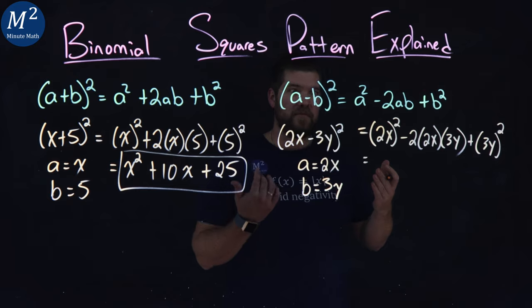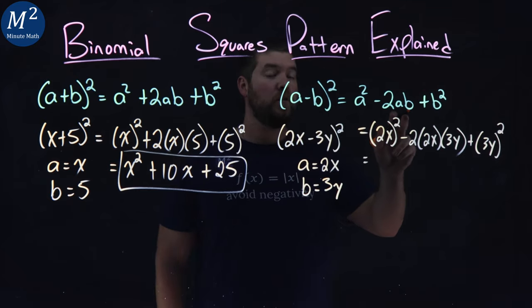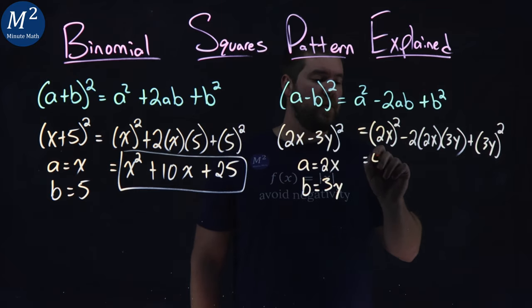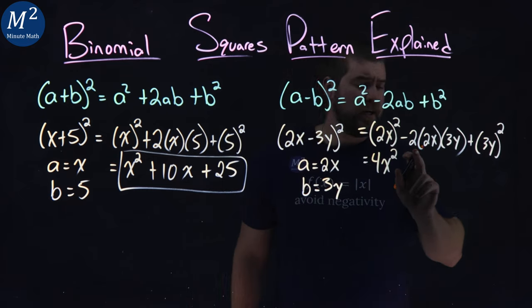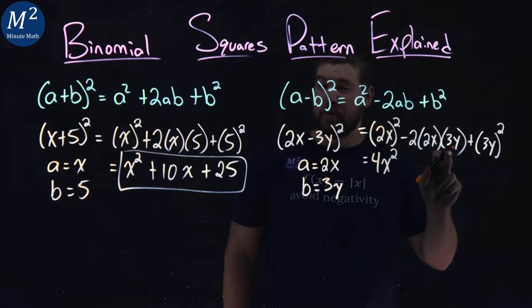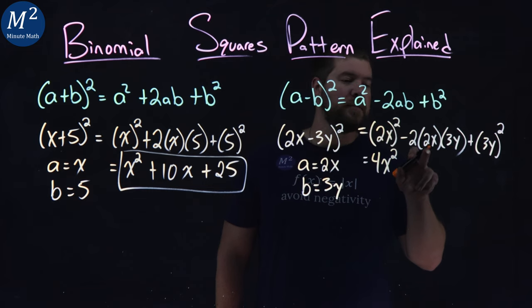From there, we want to simplify each part. 2x all squared. 2 times 2 is a 4. And we have an x squared here. The next part here, 2 times 2 times 3. Well, 2 times 3 is a 4.